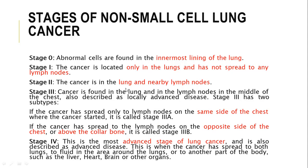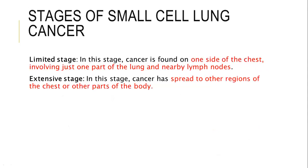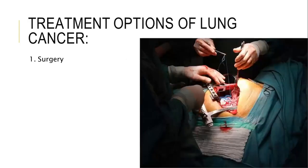Small cell lung cancer is the other kind of lung cancer. It tends to grow more quickly than non-small cell tumors, but the bright side is that it is more responsive to chemotherapy than NSCLC. The stages of small cell lung cancer: the limited stage is when the cancer happens on one side of the chest, involving just one part of the lung and nearby lymph nodes. In extensive stage, as the name suggests, it has spread to other regions of the chest or other parts of the body.